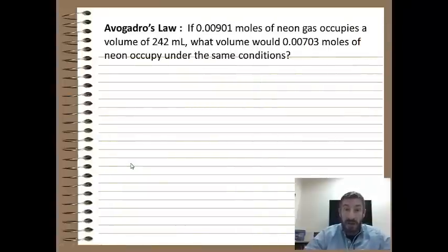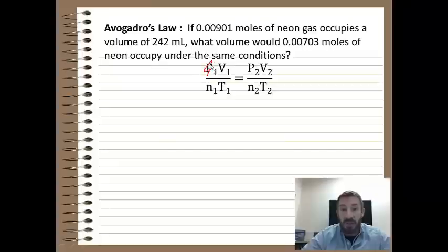So the question is, here's a question with Avogadro's Law. If we have 0.00901 moles of neon gas and it occupies a volume of 242 milliliters, what volume would 0.00703 moles of neon occupy under the same conditions? So for this, we know that pressure is held constant, so we don't need that, we know temperature is held constant. So basically we're going to have V1 over n1, and pressure is not used and temperature is not used, so we get rid of both those. And then we have V1 over n1 is equal to V2 over n2.